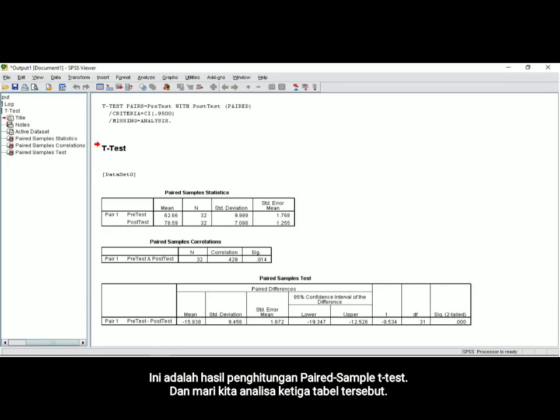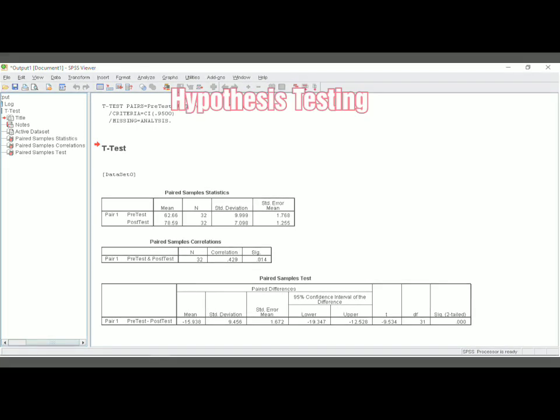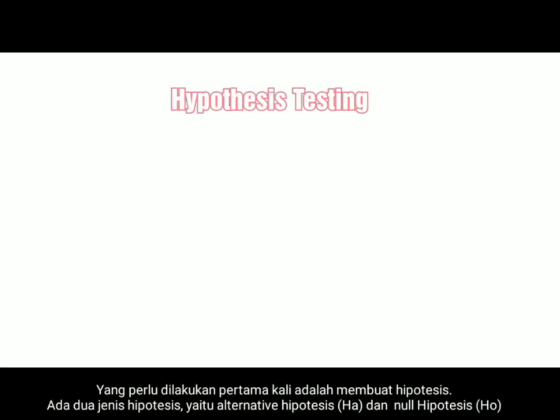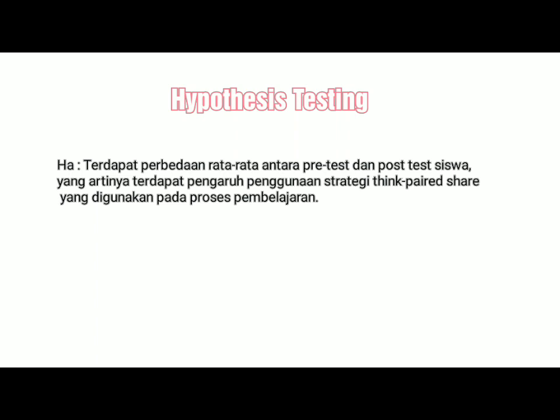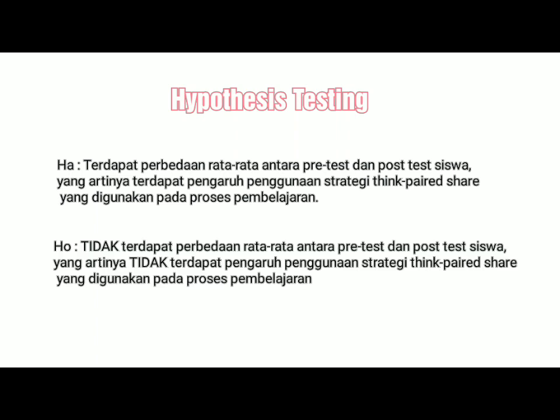Here you got the result of the paired-sample t-test. Now we analyze those three tables. First, you have to make a hypothesis. There are the alternative hypothesis and the null hypothesis. For the alternative hypothesis, you may say that there is a difference of mean score between pre-test and post-test of the students, which means there is an influence of using the think-pair-share strategy in teaching and learning process. The null hypothesis is the opposite: there is not any difference of mean score between pre-test and post-test, which means there is not any influence of using the think-pair-share strategy.